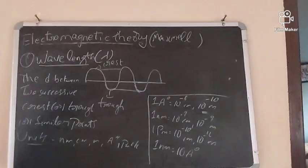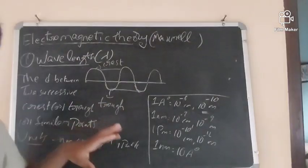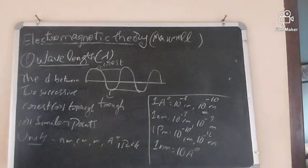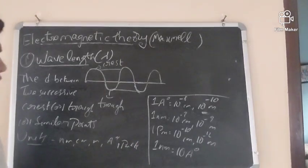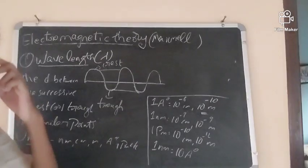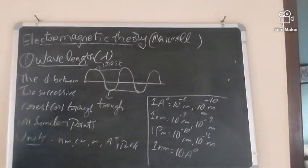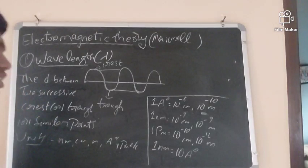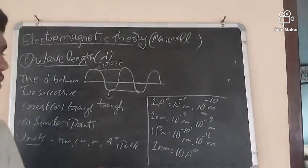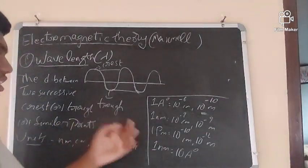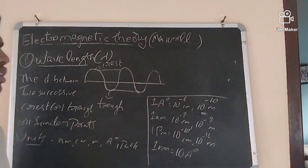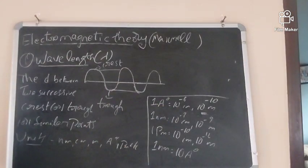One nanometer equals 10 angstroms. These are very important conversions when solving problems or objective-type questions. One angstrom equals 10⁻⁸ centimeters. Converting to meters, there are two units to add. That is about wavelength. The next property is wave number.